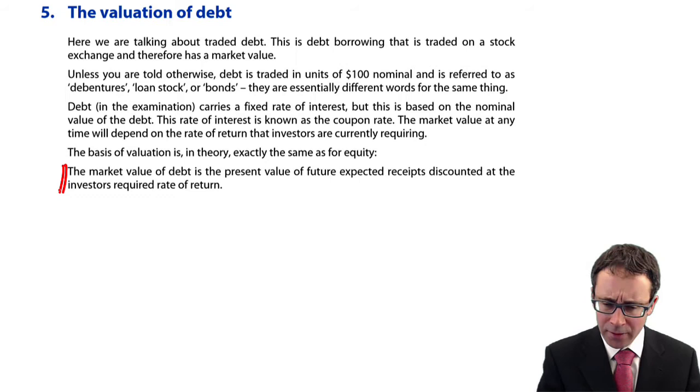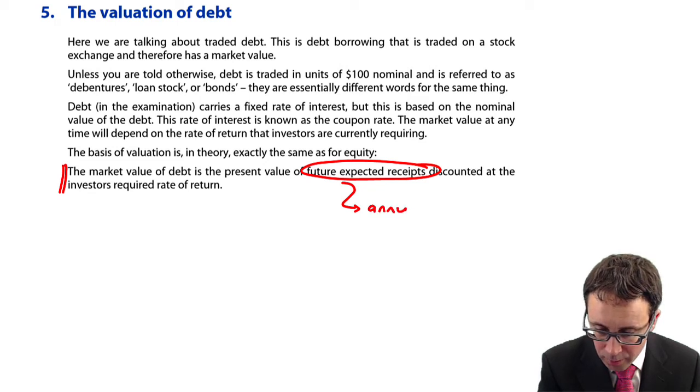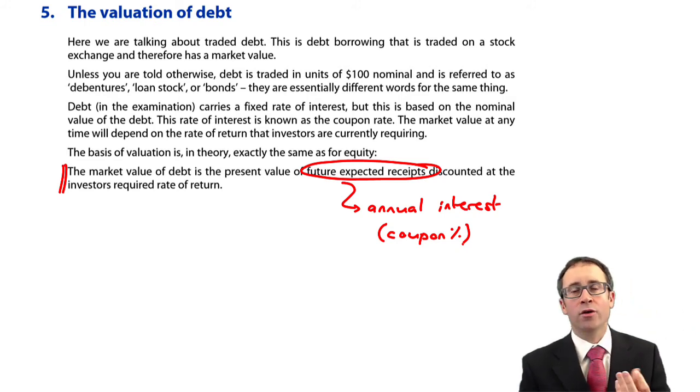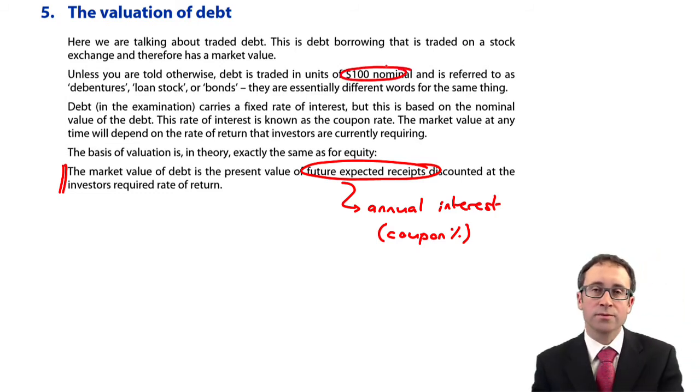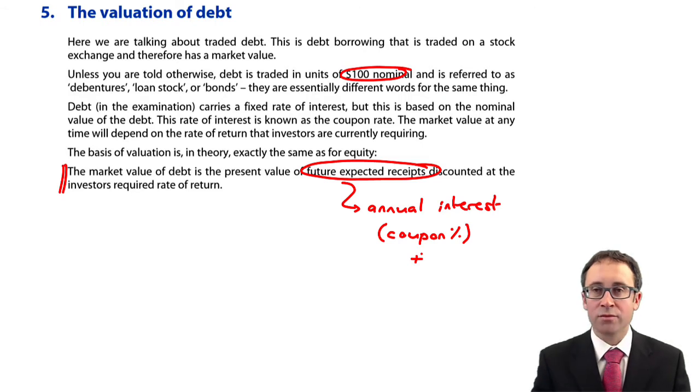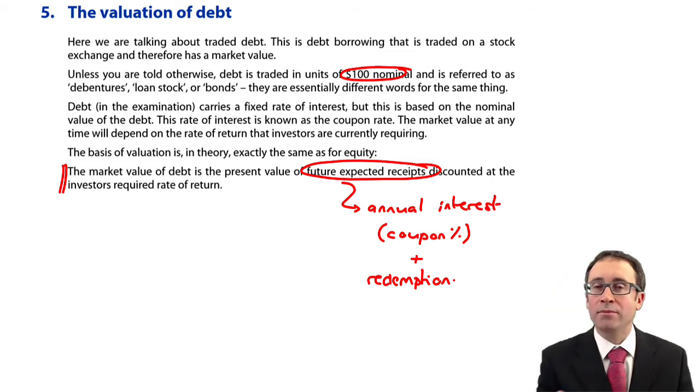Those future expected receipts will be the annual interest. The annual interest on the bond is based upon the coupon rate. To work it out, we apply the coupon rate to the par value. The par value of your debt is $100, your $100 nominal block of debentures or loan stock. If you have redeemable debt, you also look at the redemption cash flow to work out the market value.